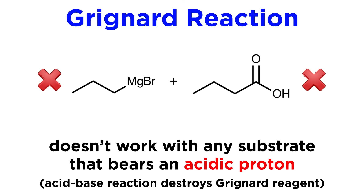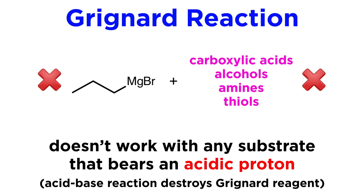Grignard reagents can't react with any substrate that has an even remotely acidic proton, however, as that will simply protonate the Grignard reagent so it will not be able to coordinate. This means that carboxylic acids, alcohols, amines, and thiols are not suitable substrates for this reaction.